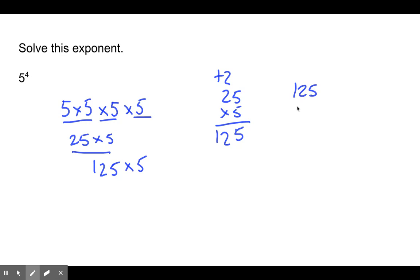All right, welcome back. So we're going to solve this exponent here. We're going to multiply 5 four times. 5 times 5 is 25. 5 times 5 is 25. Carry the 2. 5 times 2 is 10, plus 2 is 12. 125. We're going to multiply the last 5. 125 times 5. 5 times 5 is 25, carry the 2. 5 times 2 is 10, plus 2 is 12. 5 times 1 is 5, plus 1 is 6. 625 is our answer.